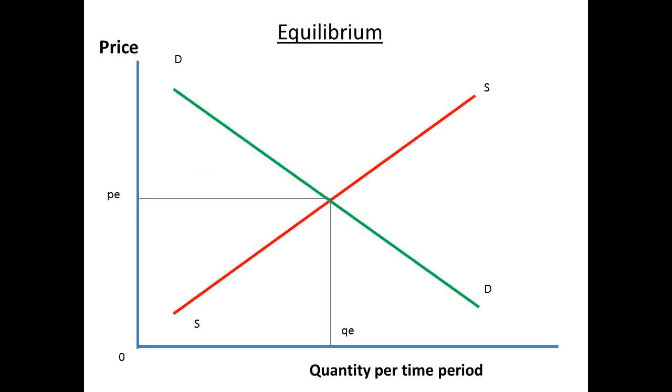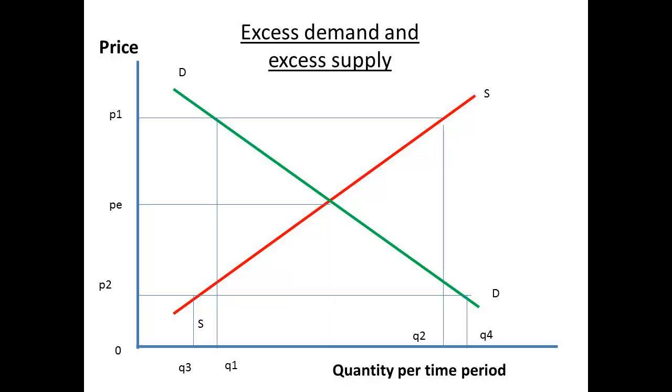We shall start by considering the demand and supply curves of a normal good. Note that these will intersect. At this point the demand for the good and the supply of the good are the same. This is a position of equilibrium. And the price at this point is known as the equilibrium market price.